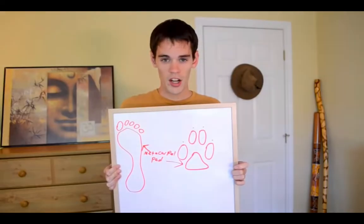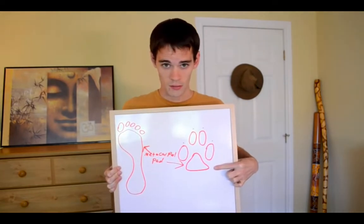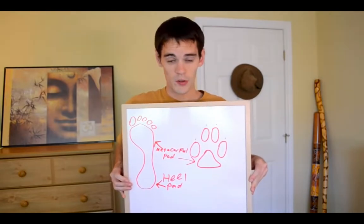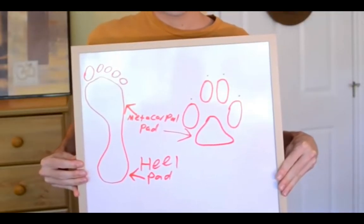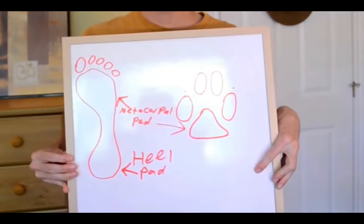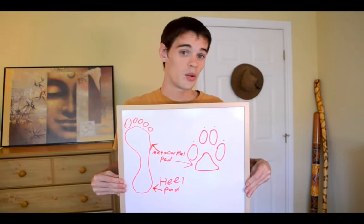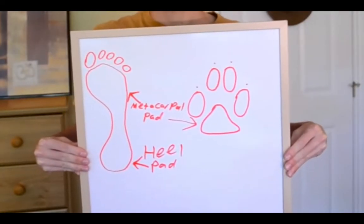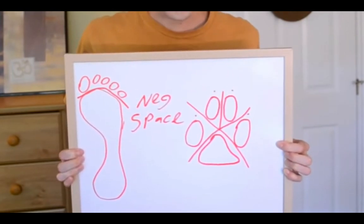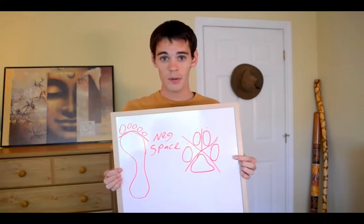Our third track component is called the metacarpal pad — that area right there. This is not to be confused with the heel pad. On a dog track, we see one of the major differences from humans: dogs don't really have heel pads that register in their tracks — they actually walk on their toes. This shows why knowing the track topography is so important, because it gives us direct insight into the animal.